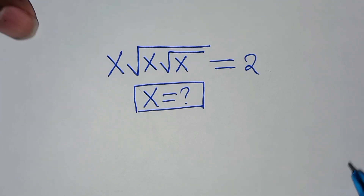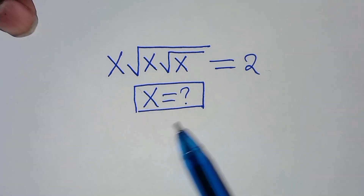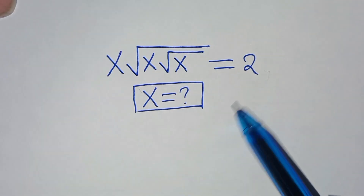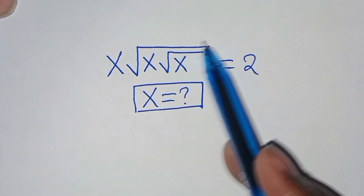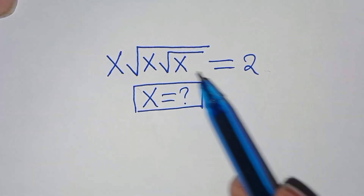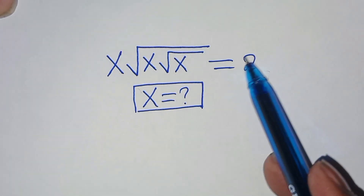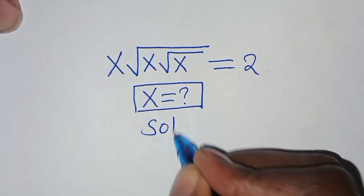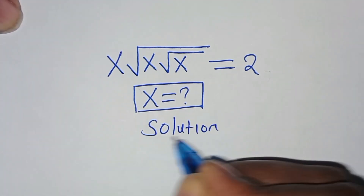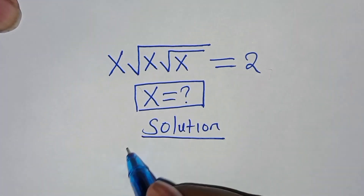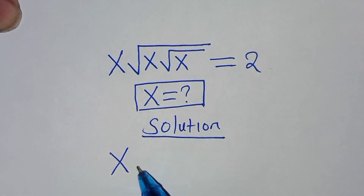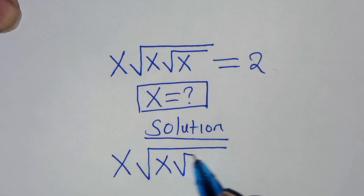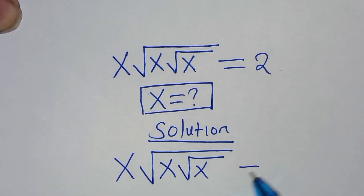Hello everyone, you are welcome to solve for the value of x given this nice radical expression. We have x times square root of x times square root of x, and this is equal to 2. So what is the value of x? Now let's present a solution here. So we have x times square root of x times square root of x, this is equal to 2.